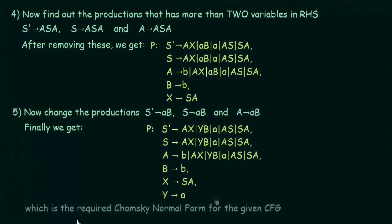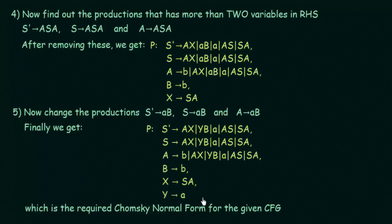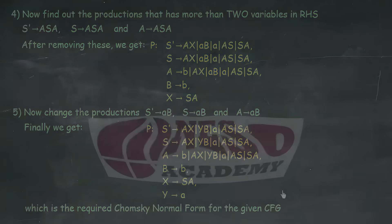We get the final production which is the required Chomsky normal form for the given context free grammar. Checking this production, it follows all the rules of Chomsky normal form. We have successfully converted the given context free grammar to Chomsky normal form. I hope this was helpful. Thank you for watching and see you in the next one.